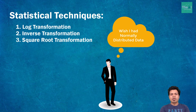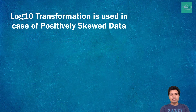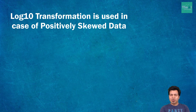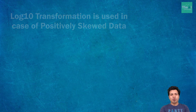We generally use methods like skewness or kurtosis to check if data is normally distributed. Log10 transformation is used when we have positively skewed data — that is, data highly skewed to the right — and we want to transform it into normally distributed data. If you don't know what skewness is, let me give you a brief overview.